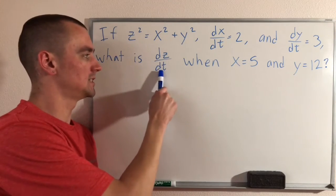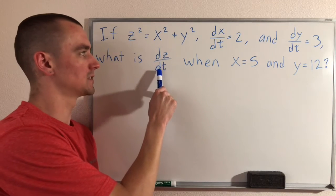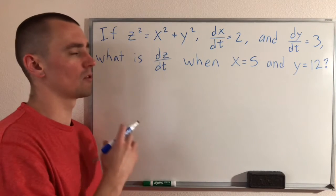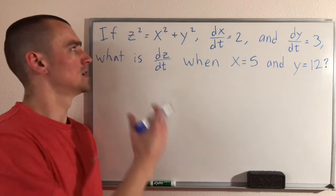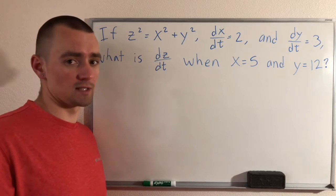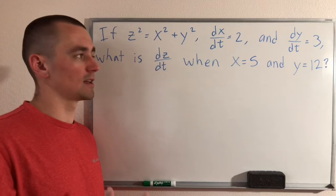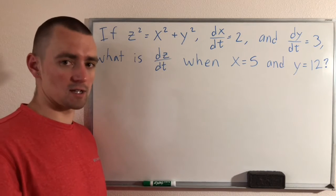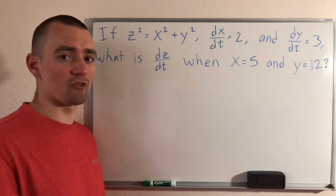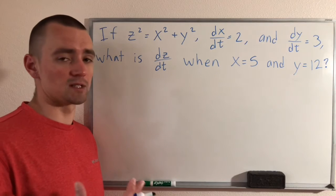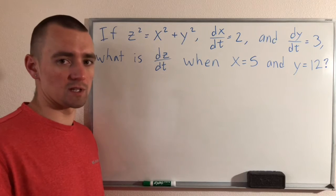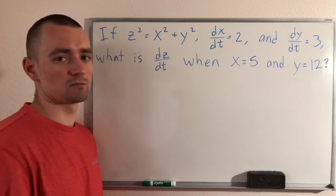So the fact that we have a dt down here tells us that we have to take the derivative with respect to time. Since we have an equation here which only relates x, y, and z and not t, that tells us that x, y, and z are all going to be treated as a function of t, which means that we're going to have to do implicit differentiation in order to solve this problem.